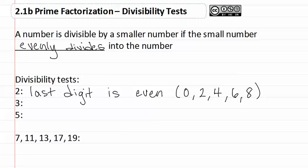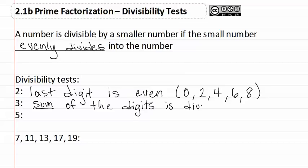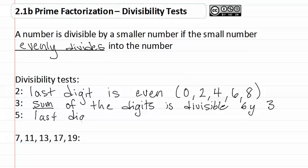We know that a number divides by three if the sum of the digits is divisible by three. Next, we know that the number is divisible by five if the last digit is a five or a zero.